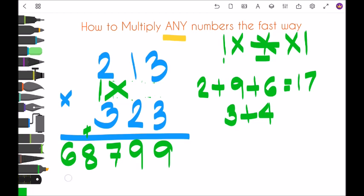So two times three is six. So the final answer is sixty-eight thousand, seven hundred ninety-nine.